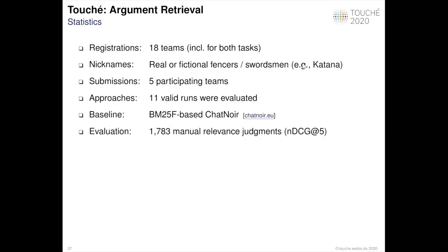For the second task, we received 18 team registrations. Each team was assigned a fictional team name. Five teams actively participated and submitted their results. We allowed participating teams to submit more than one run, resulting in 11 valid runs that we evaluated. Additionally, we evaluated one retrieval baseline — a BM25-based search engine, Anserini. The final unique document pool comprised about 2000 retrieved documents that our assessors manually evaluated.